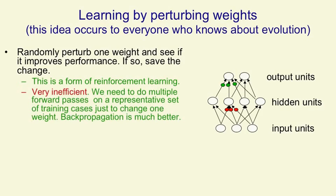The problem is it's very inefficient. Just to decide whether to change one weight, we need to do multiple forward passes on a representative set of training cases. We have to see if changing that weight improves things, and you can't judge that by one training case alone. Relative to this method of randomly changing a weight and seeing if it helps, backpropagation is much more efficient — actually more efficient by a factor of the number of weights in the network, which could be millions.